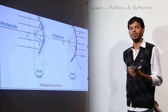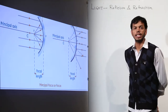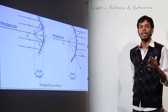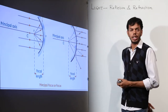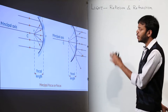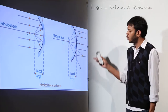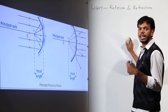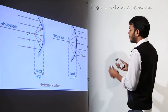Concave and convex mirrors are also called converging and diverging mirrors. Rays coming parallel to the principal axis from infinity get directed toward the focus in a concave mirror — it converges all rays to a point, hence converging mirror. In a convex mirror those same parallel rays appear to diverge from a virtual focus behind the mirror, forming a virtual point image — hence diverging mirror.